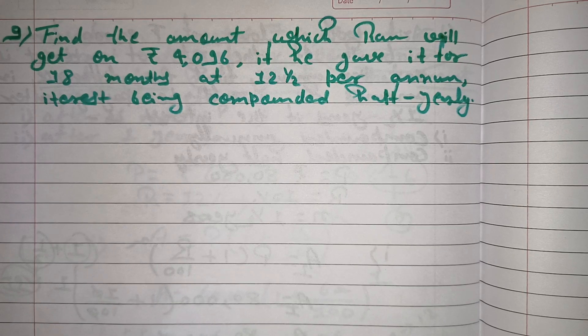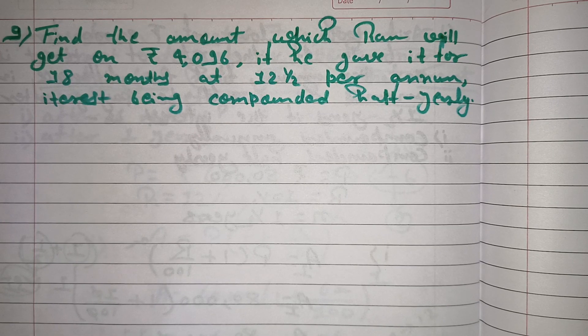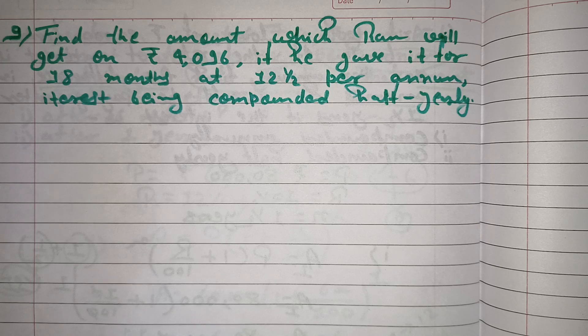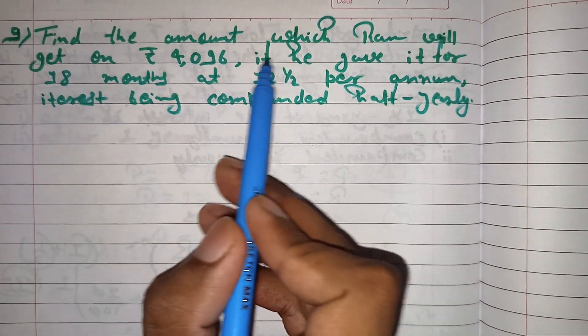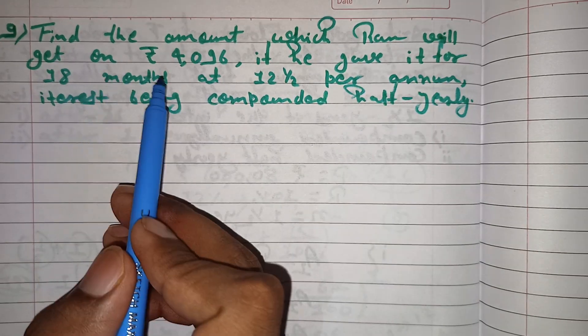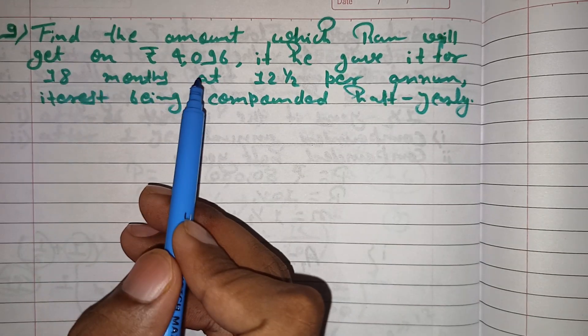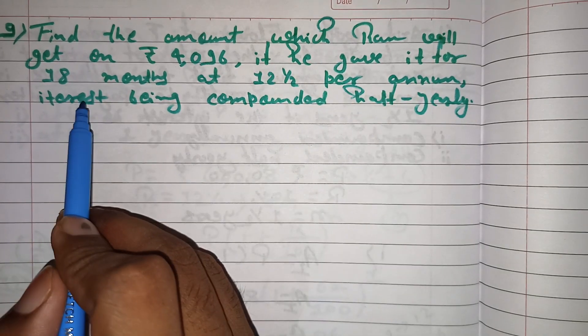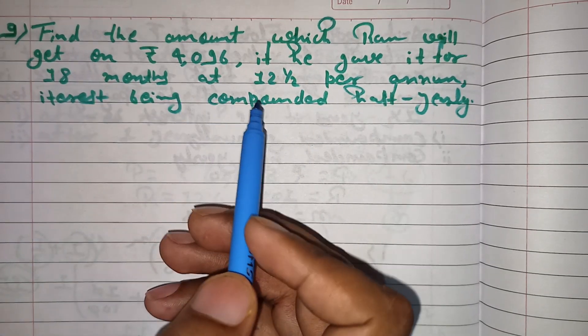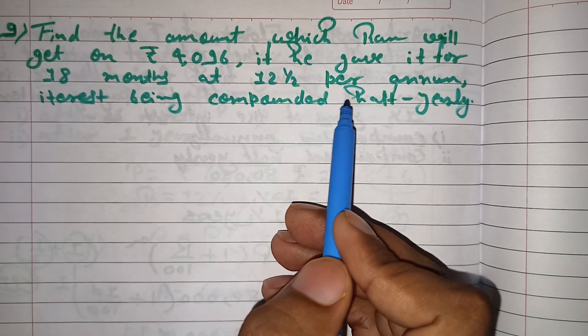In today's video we will discuss question number 9 from comparing quantities exercise 8.3. The question is: find the amount which Ram will get on rupees 4096 if he gave it for 18 months at 12 and half percent per annum.